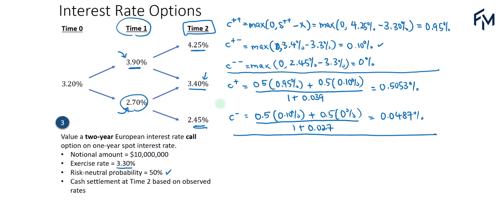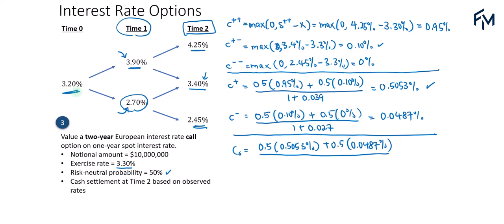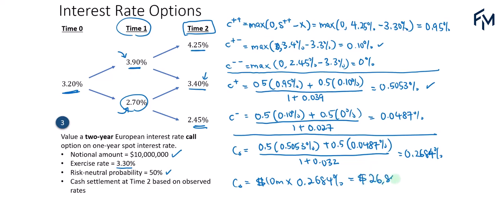Finally, we discount back to time zero. The call option price at time zero is 0.5 × 0.5053% plus 0.5 × 0.0487%, discounted by 1 plus 3.2%, giving approximately 0.2684%. Scaled to the $10 million notional, the call option value is $26,840.